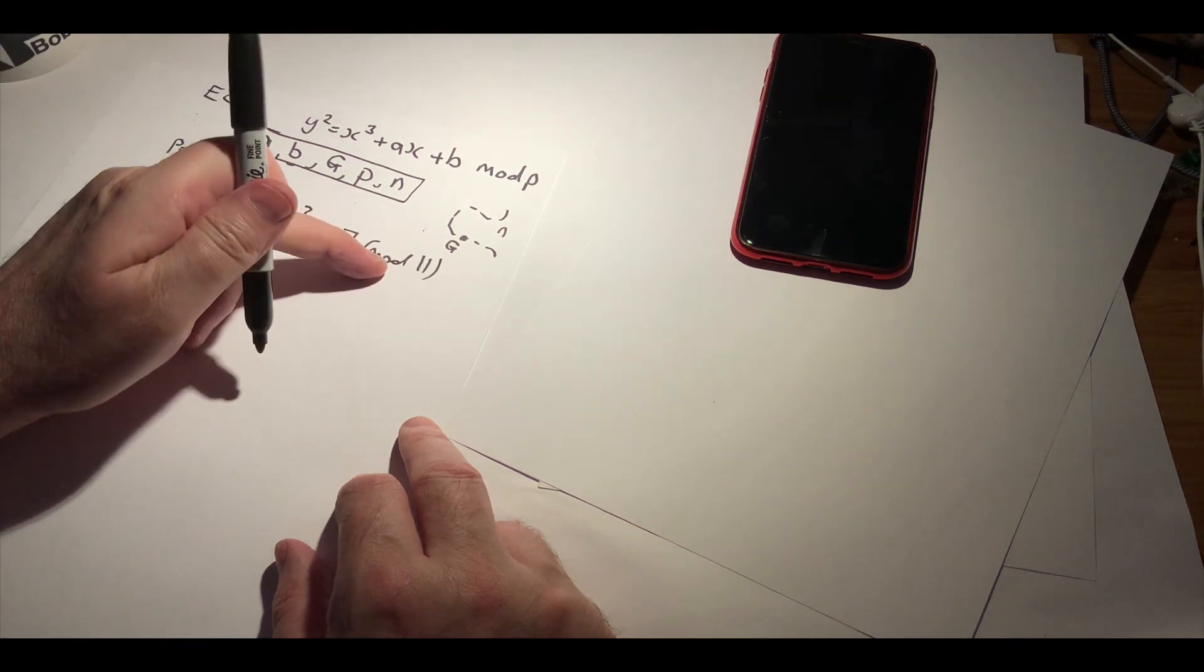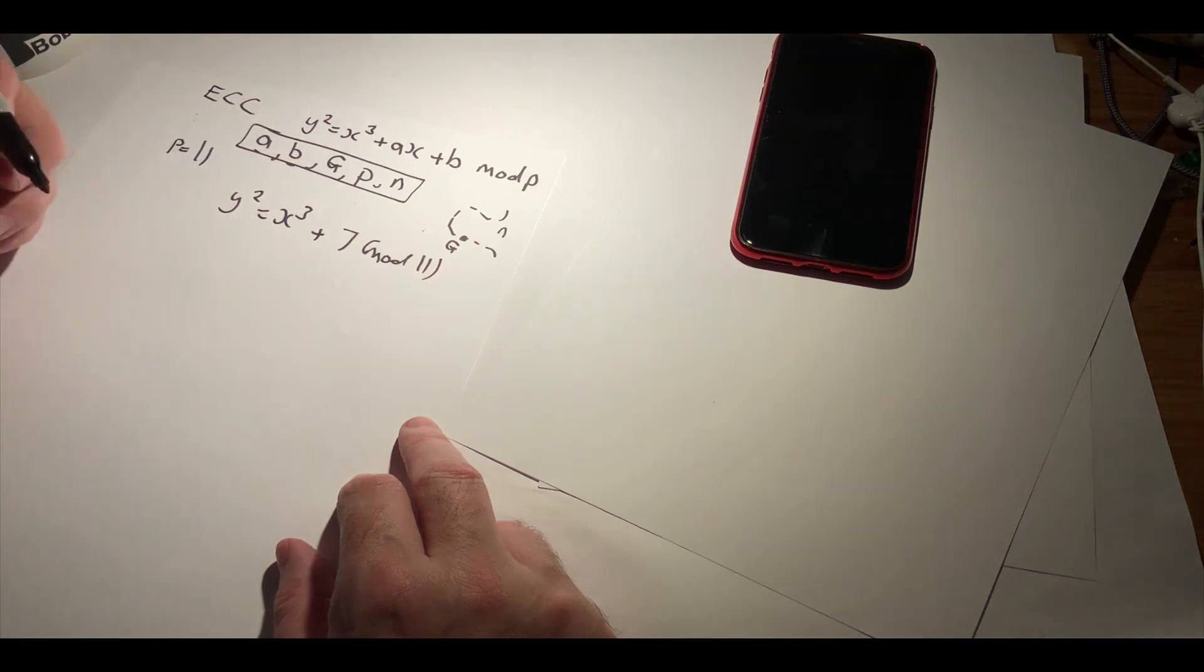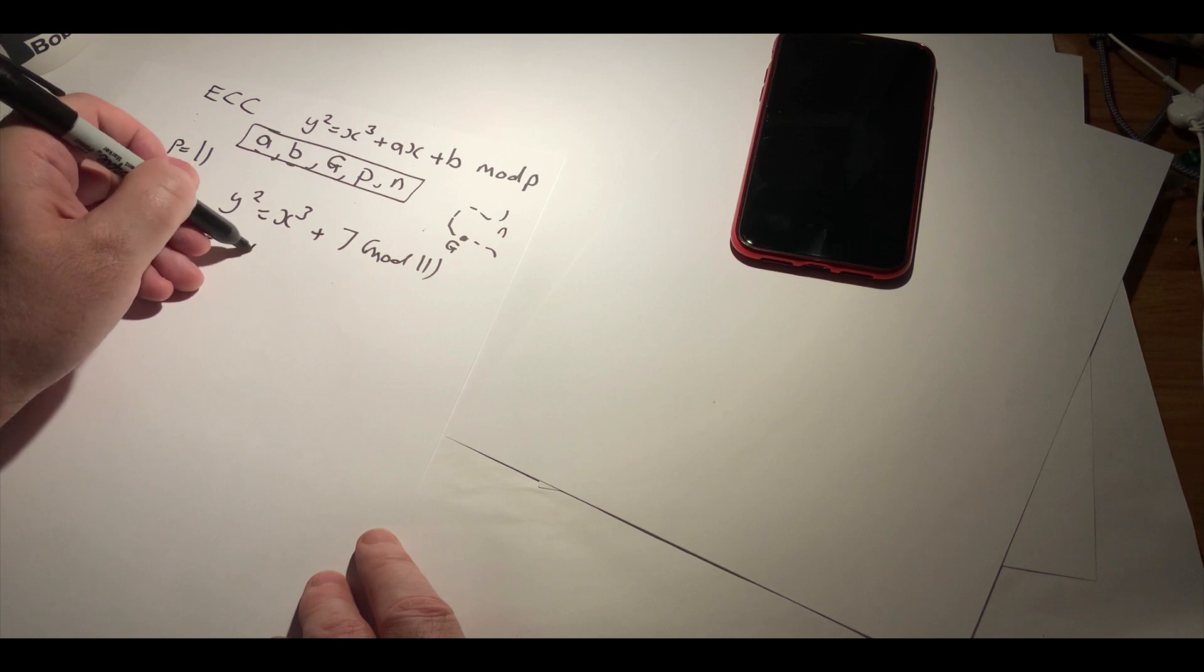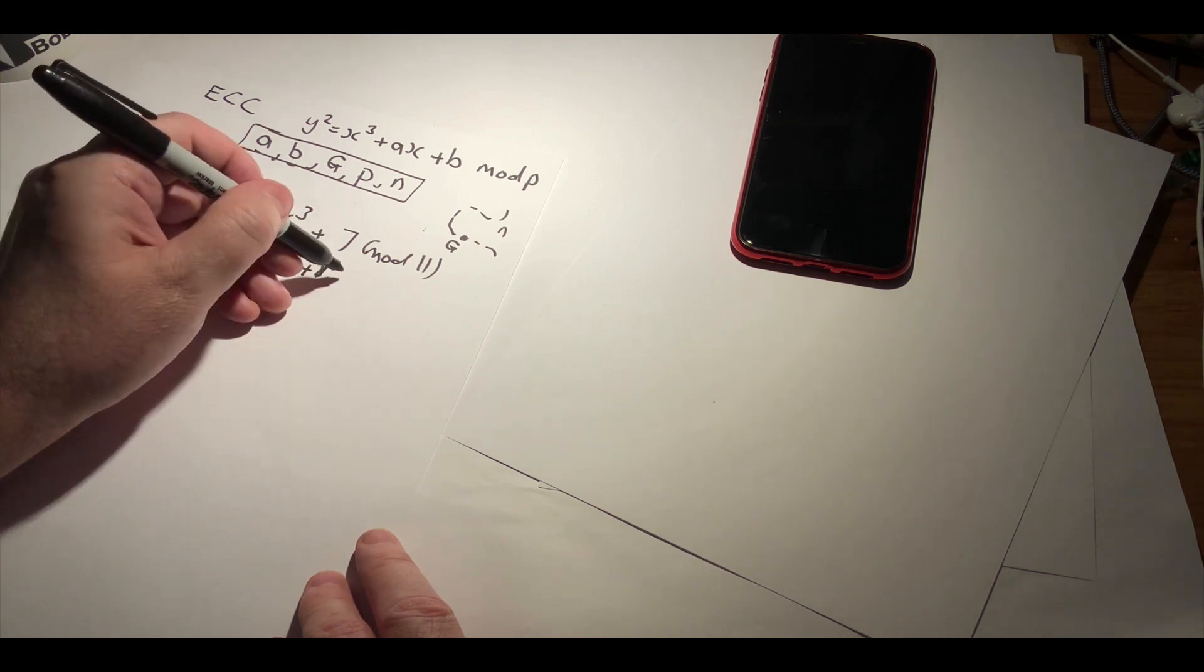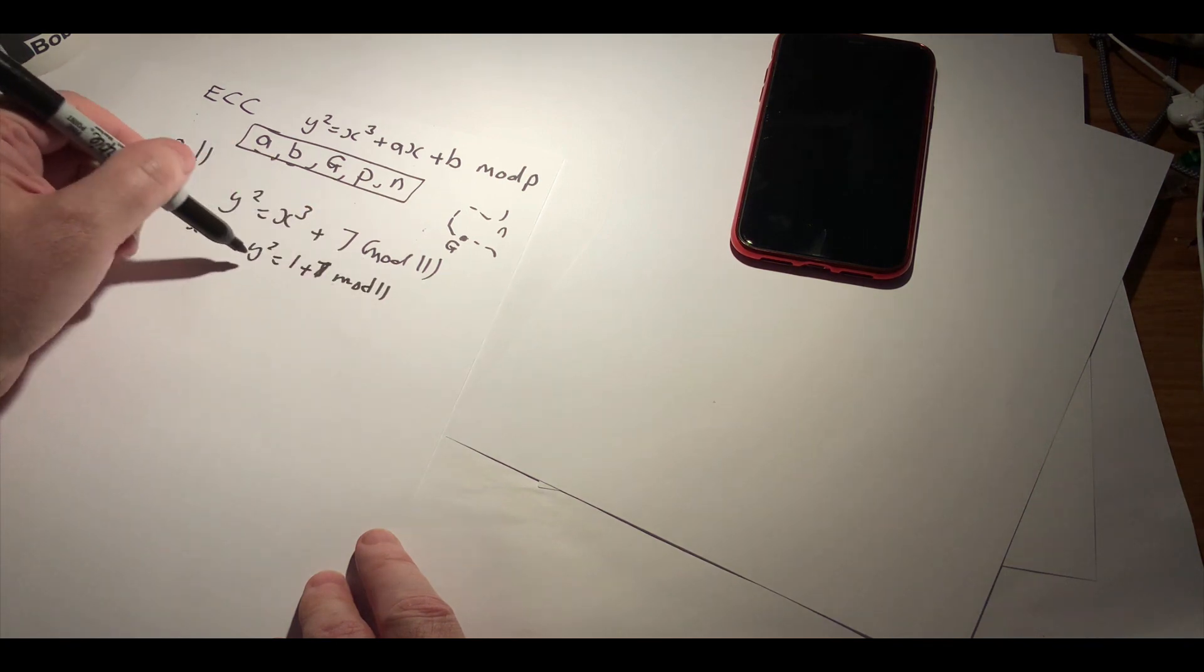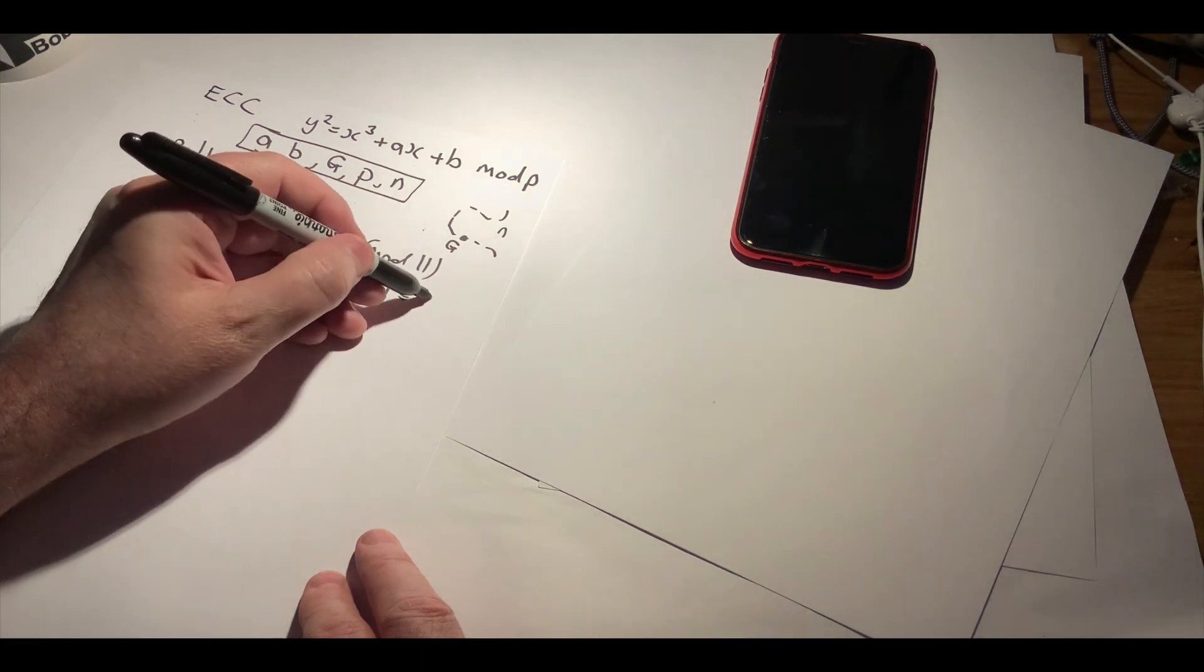Remember, the mod operation is the remainder after division by 11. So if we try x equals 1, then we get y squared is equal to 1 plus 7 mod 11, so that's 8 mod 11, which gives 8.